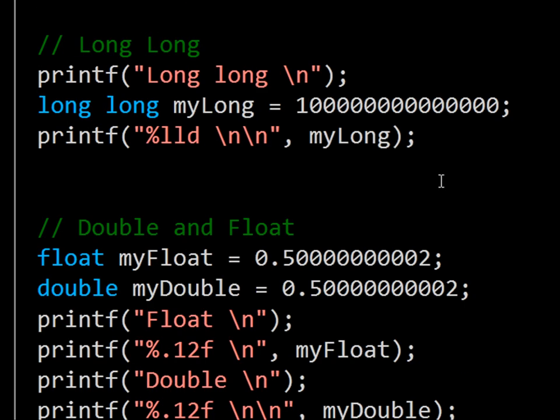This next block, demonstrating long long, is simpler. It simply demonstrates that we can have very large numbers with long long types. The token to print this type is %LLD.